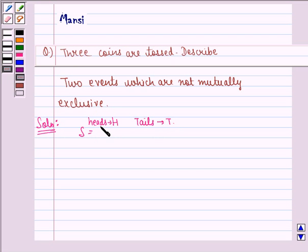So the sample space for this event will be HHH, HHT, HTH, HTT, THH, THT, TTH, and TTT.